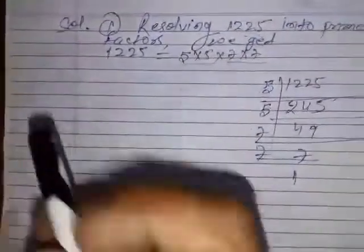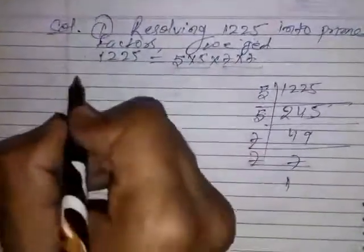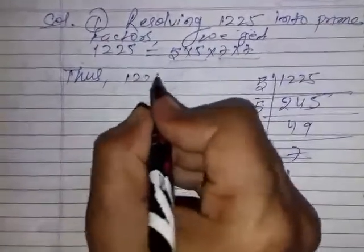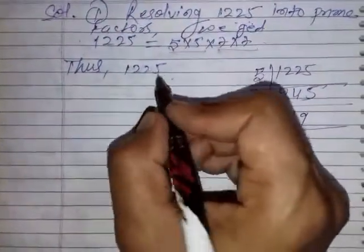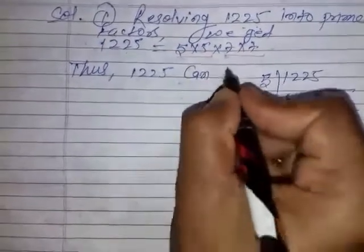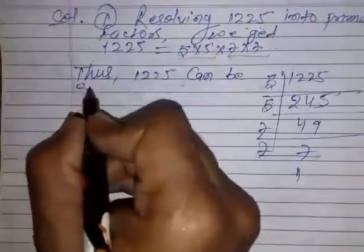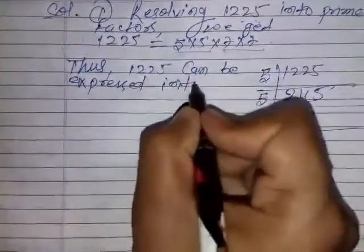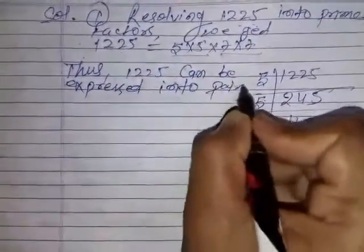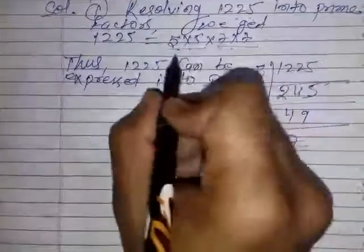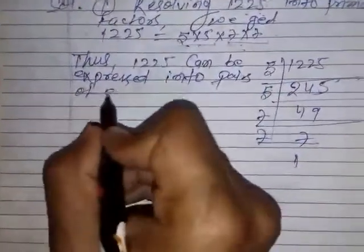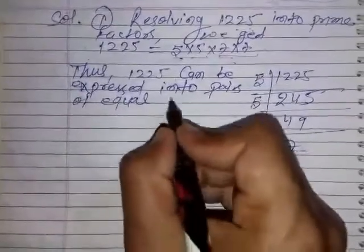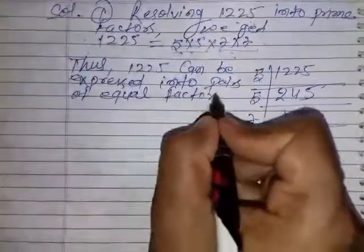Thus, 1225 can be expressed into pairs of equal factors.